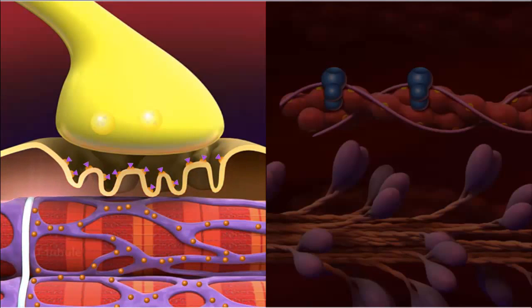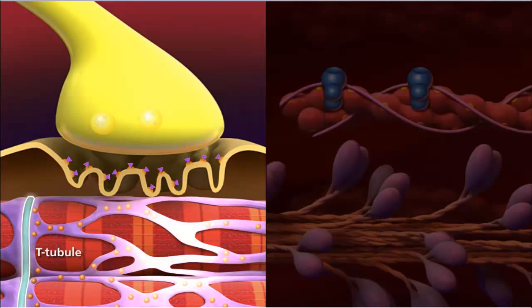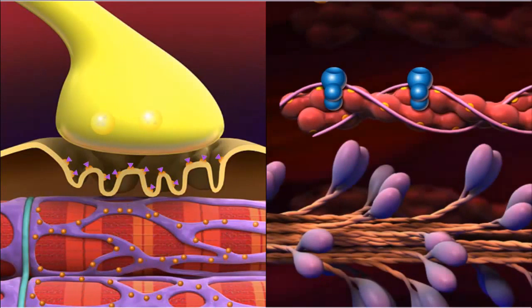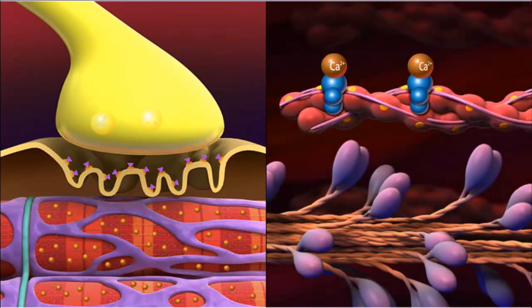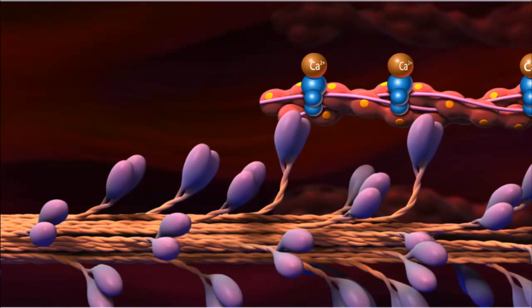The electrical impulse travels down the T-tubules and opens calcium stores. Calcium ions flow to the myofibrils, where they trigger a muscle contraction.